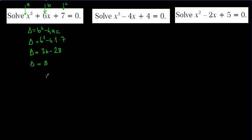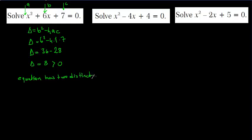Delta equals 8, which is greater than 0, so the equation has two different distinct real roots.